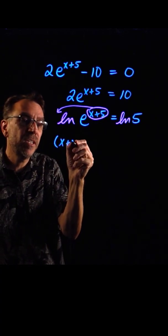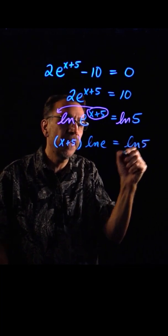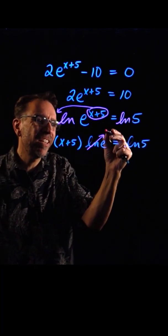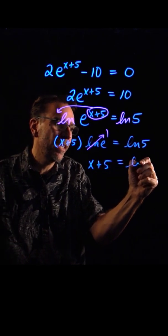All right, so that'll leave us with x plus 5 times the natural log of e equals the natural log of 5. Now, the natural log of e, you can do that on a calculator. That's just 1, and we have x plus 5 equals the natural log of 5.